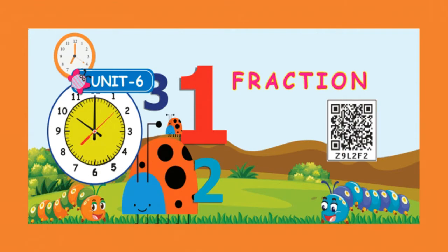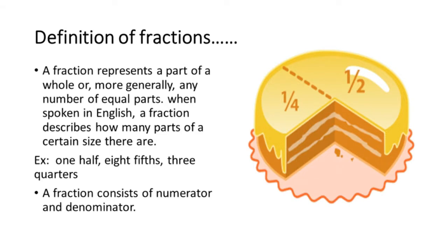Fractions means dividing a whole part into many number of parts. Definition of fractions: a fraction represents a part of a whole, or more generally, any number of equal parts. When spoken in English, a fraction describes how many parts of a certain size there are. Examples: one half, eight fifths, three quarters. A fraction consists of a numerator and denominator.